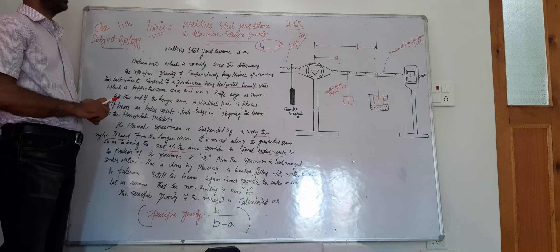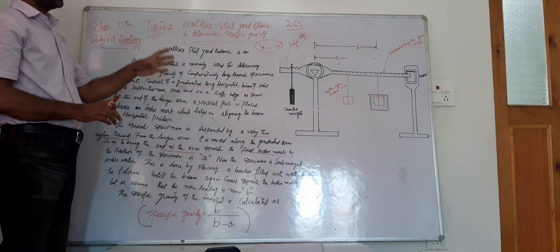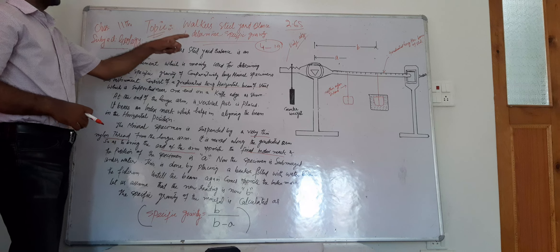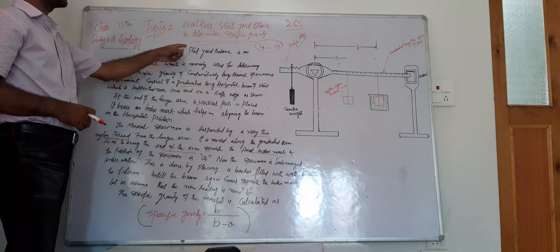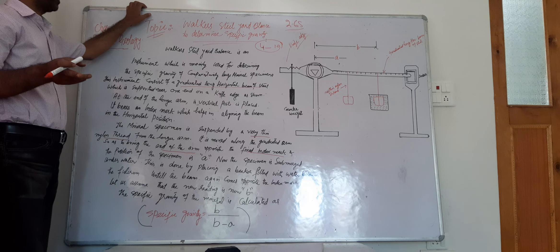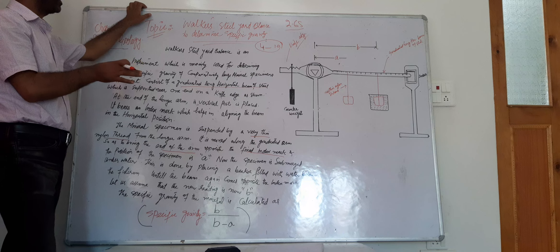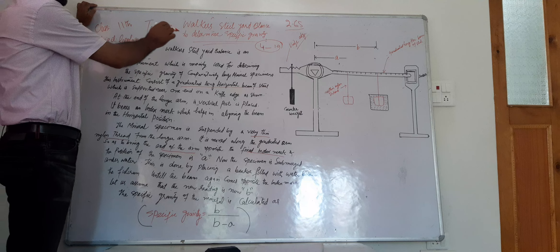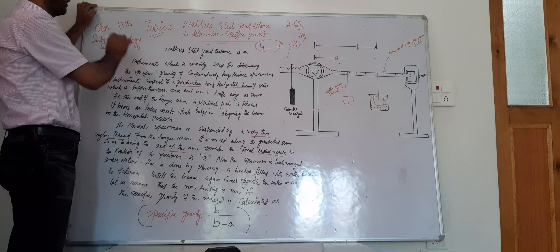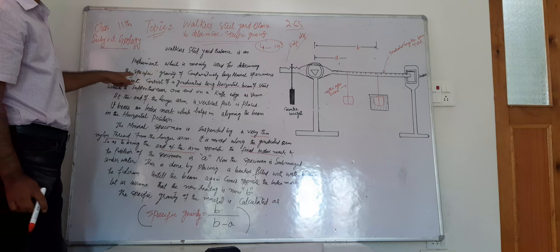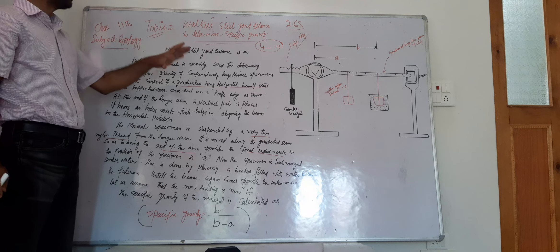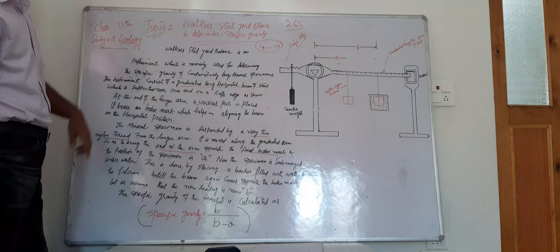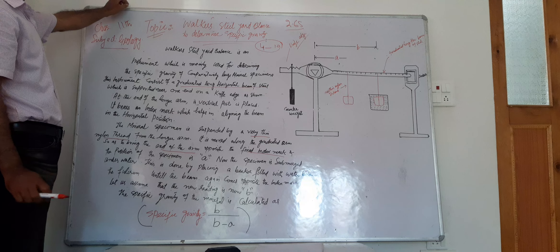Now we will understand how to determine the specific gravity of a mineral using Walker's Steel Yard Balance. Jolly's Balance was used for smaller mineral specimens or mineral fragments, whereas Walker's Steel Yard Balance is an instrument mainly used for determining the specific gravity of comparatively large minerals or large mineral specimens.